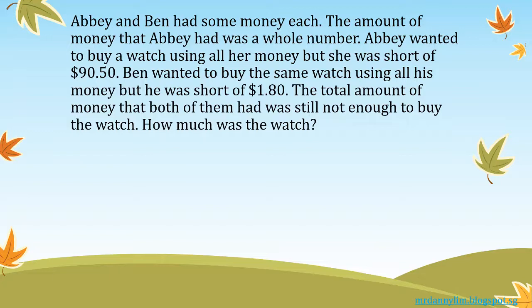After deciding on model drawing, we have to decide how to draw the model. Usually in schools, with two persons you draw two bars — one for Abby and one for Ben. But for this question, we are going to draw just one bar, because we are interested in the total amount of money.